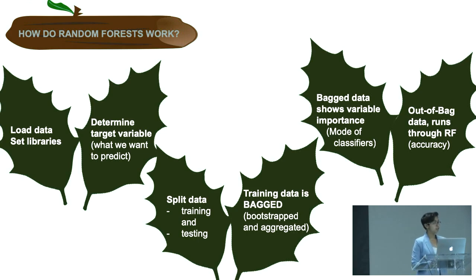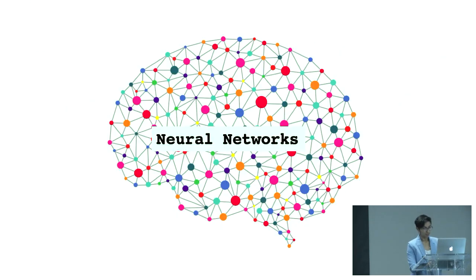Very briefly how they work. You're going to load your data, set your libraries, determine your target variable which is the thing you want to predict for, like fraud or not fraud. Then you're going to split your data into training and testing. Your training data is going to be bagged, which means bootstrapped and aggregated. From the bagged data you're going to discern what are the most important variables, and that's really valuable. Then you're going to run your out of bag data set, your testing data, through the random forest classifier, and that's going to help you discern whether your model is accurate.